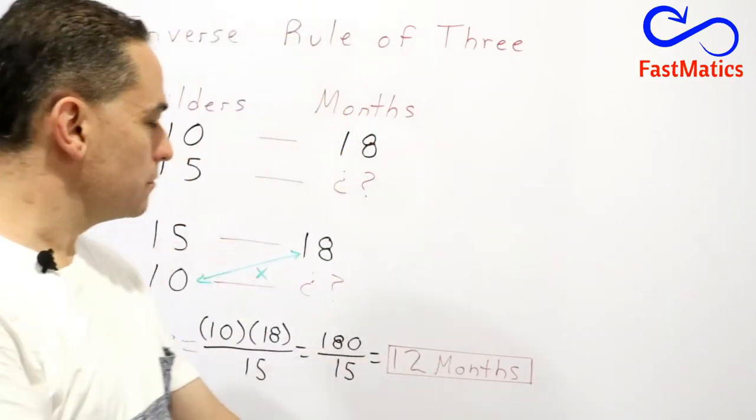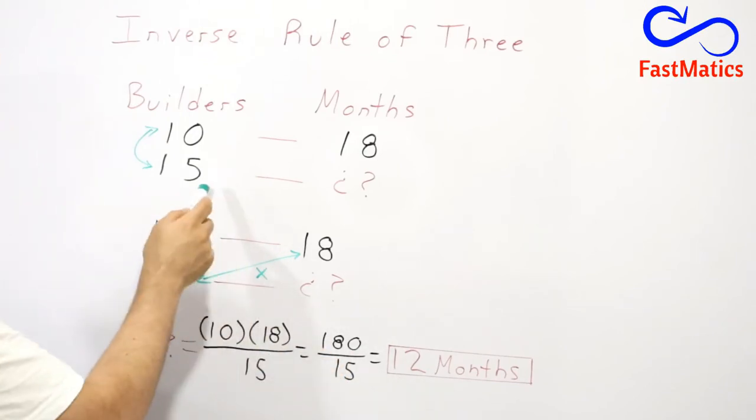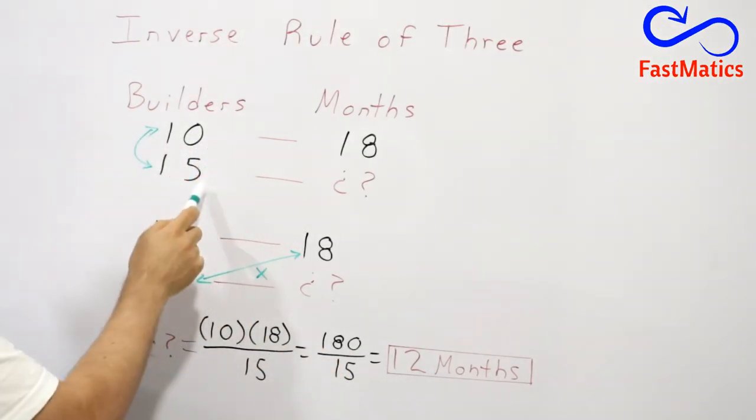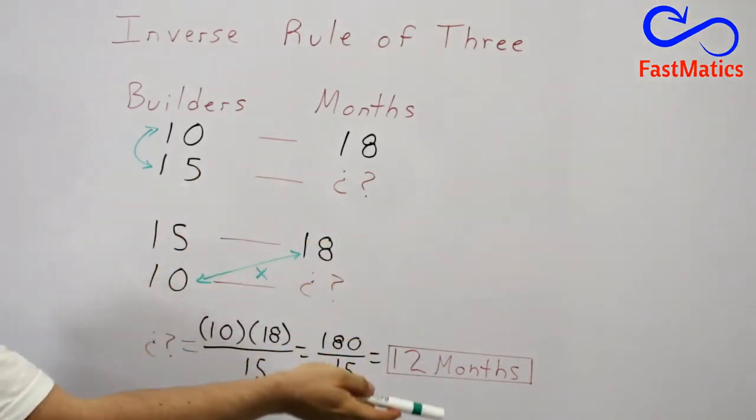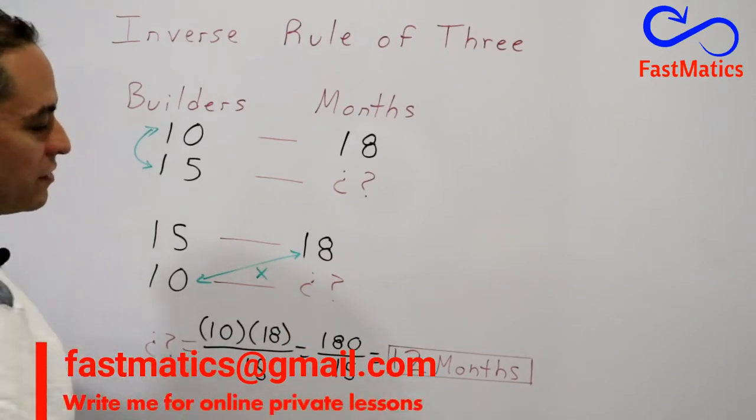Here it is logical. More builders, less months. Instead of 10 builders, 15 builders will finish the house not in 18 months but in 12 months.